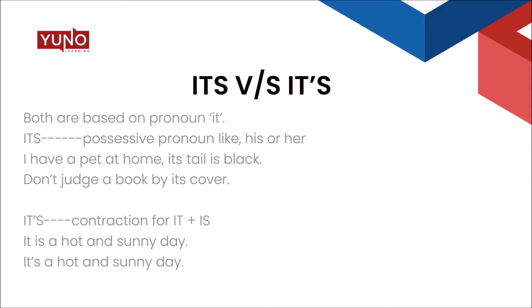Now we talk about the second usage: I-T-apostrophe-S. 'It's' is a contraction which combines the two words 'it is'. The simplest example: 'It is a hot and sunny day' becomes 'It's a hot and sunny day.' So 'it's' is a contraction that combines two separate words. Notice also there's a slight difference in pronunciation — 'it is' has three clearly separate words, while 'it's' is pronounced quickly and crisply. I hope you've got some clarity over the difference in usage of 'its' and 'it's'.